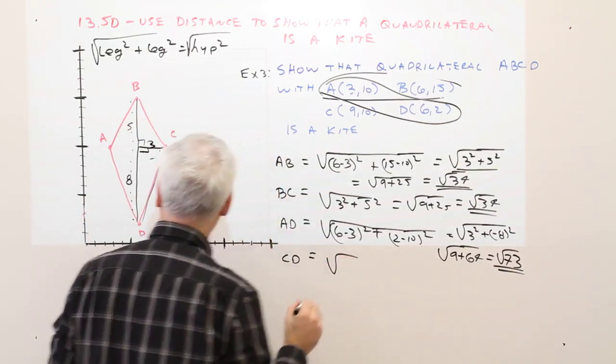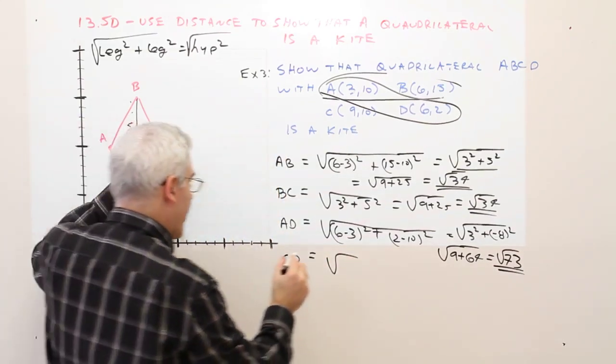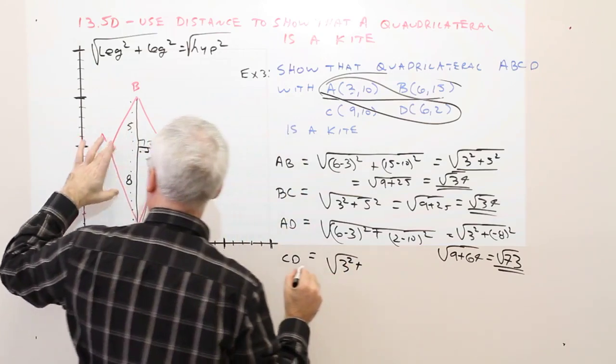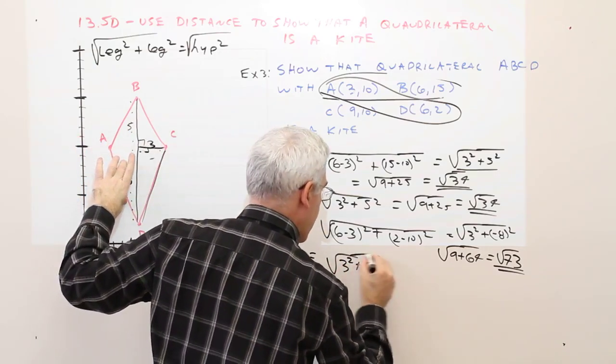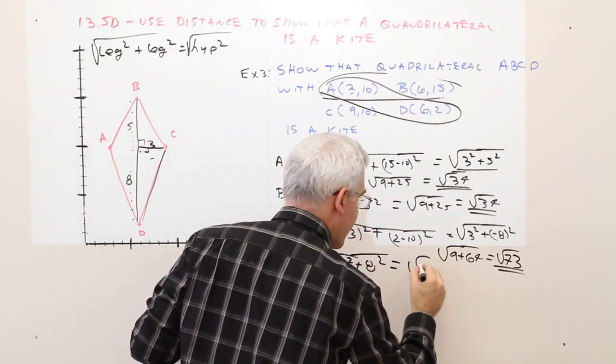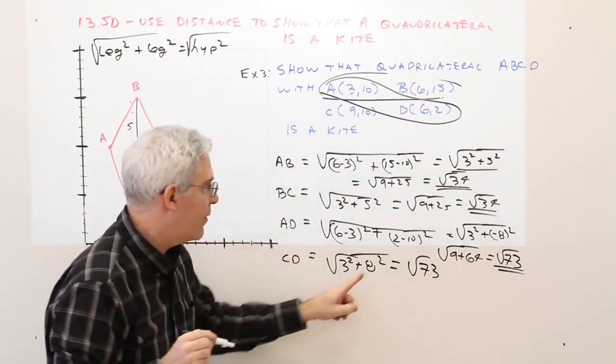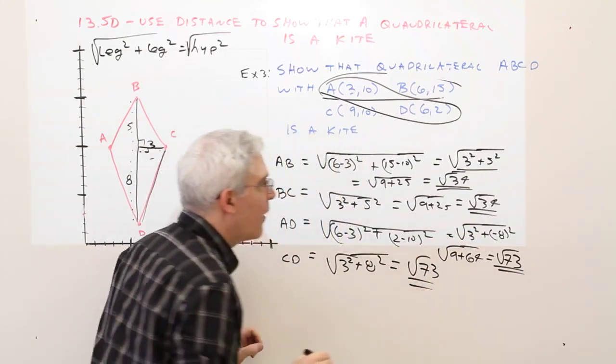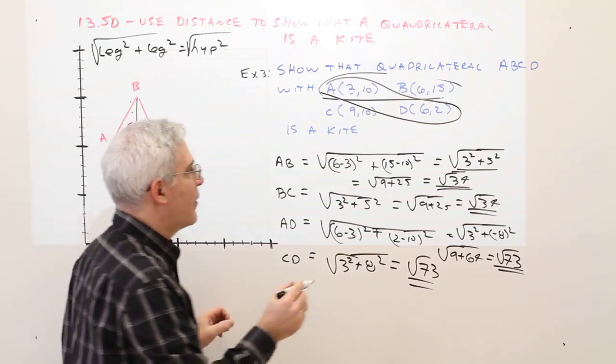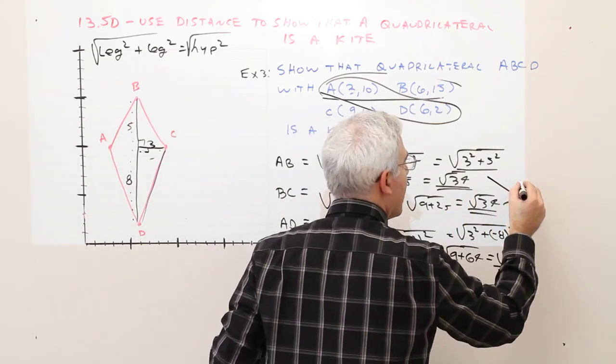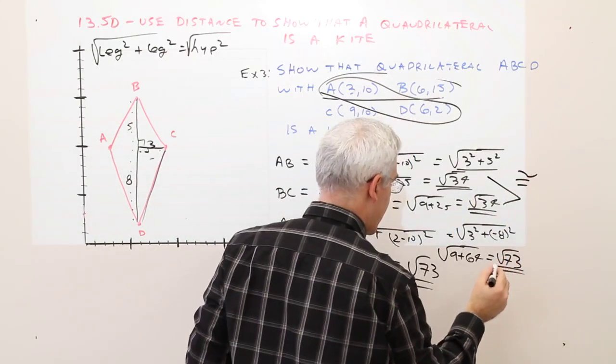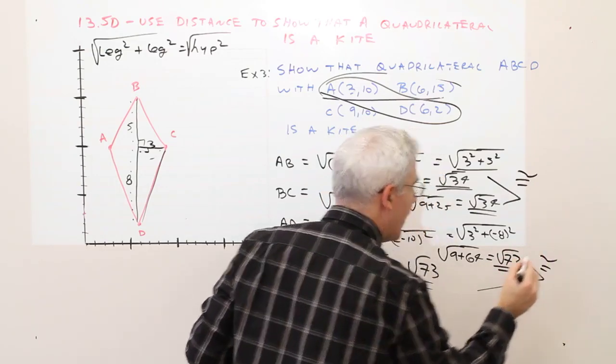So it's going to be the square root of that leg squared plus that leg squared, which will again be the square root of 73. So these are congruent, these are congruent.